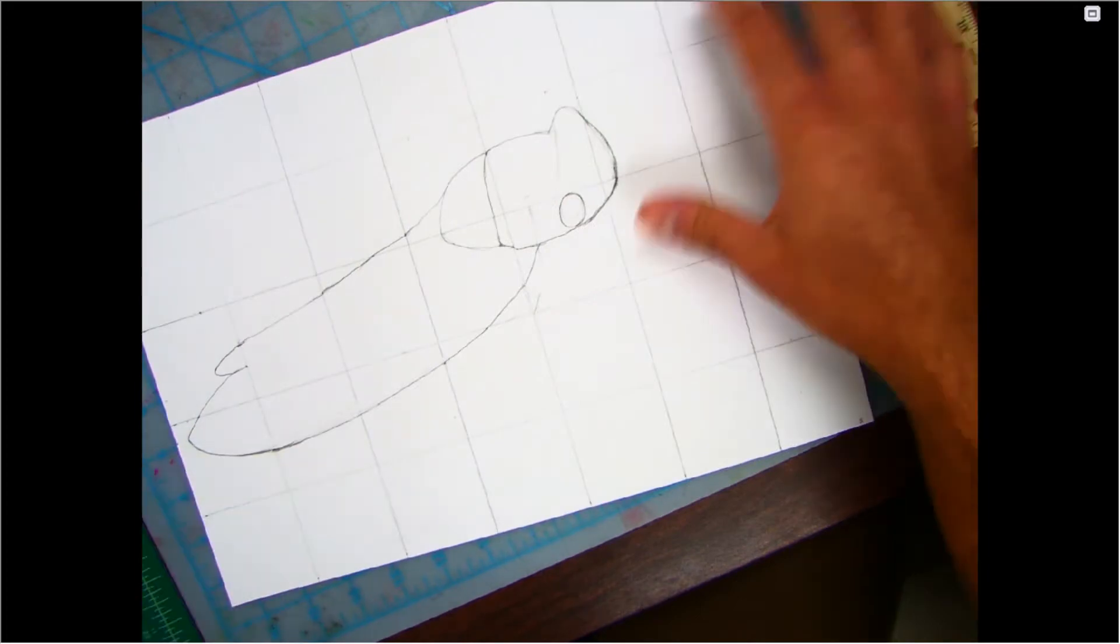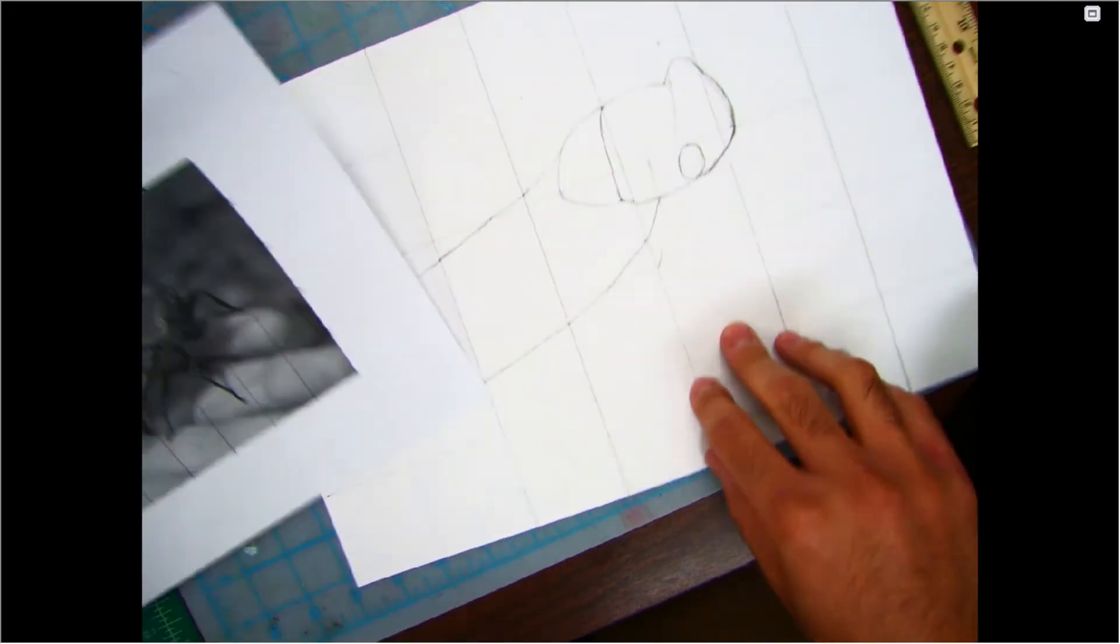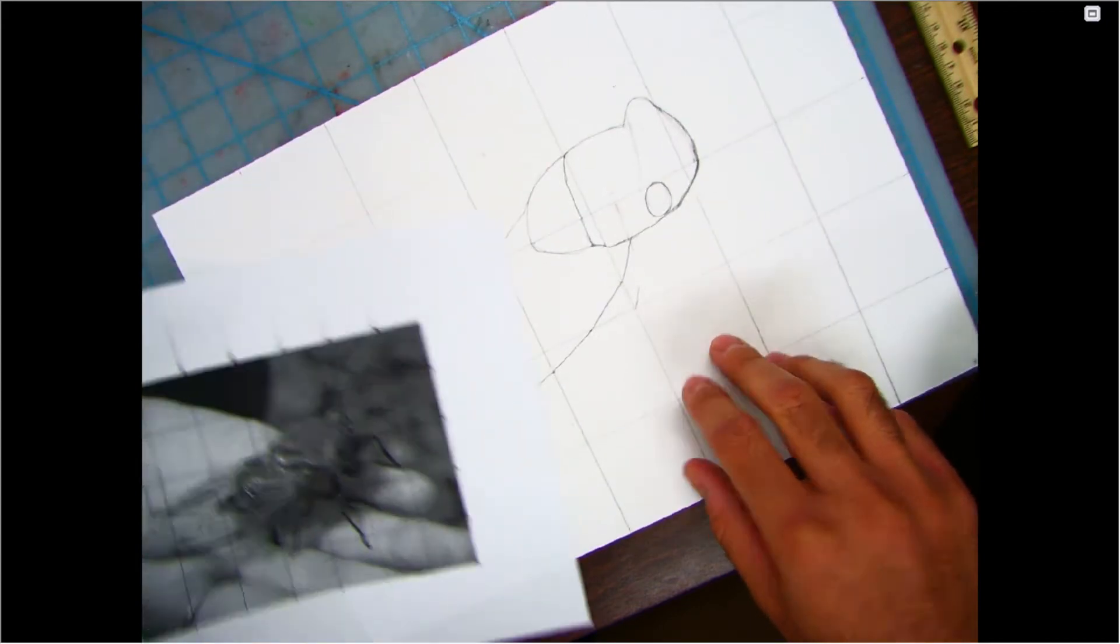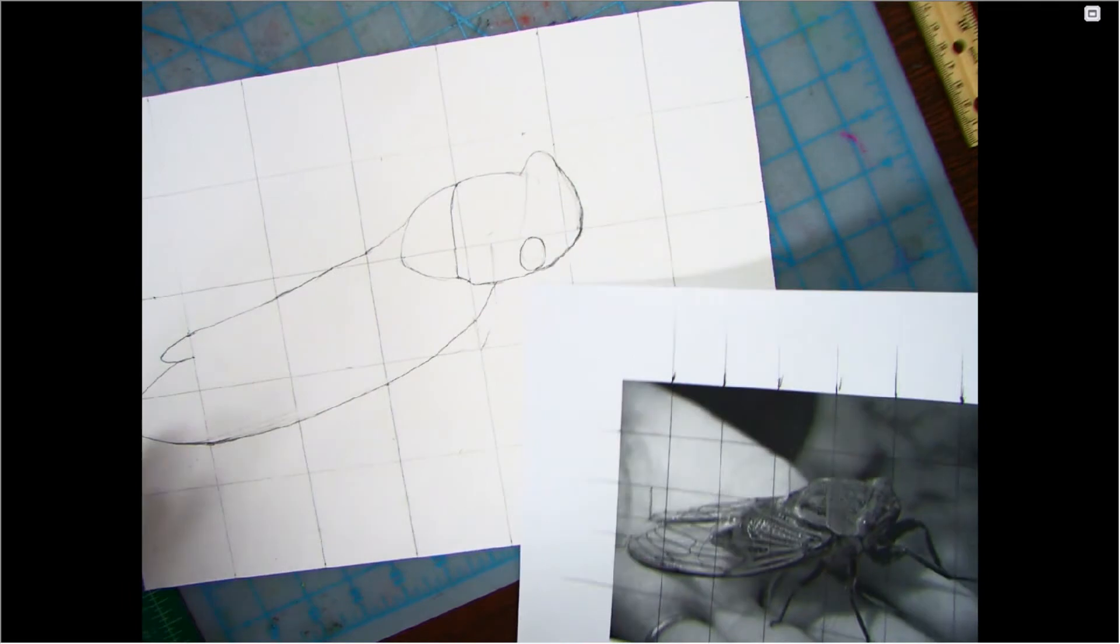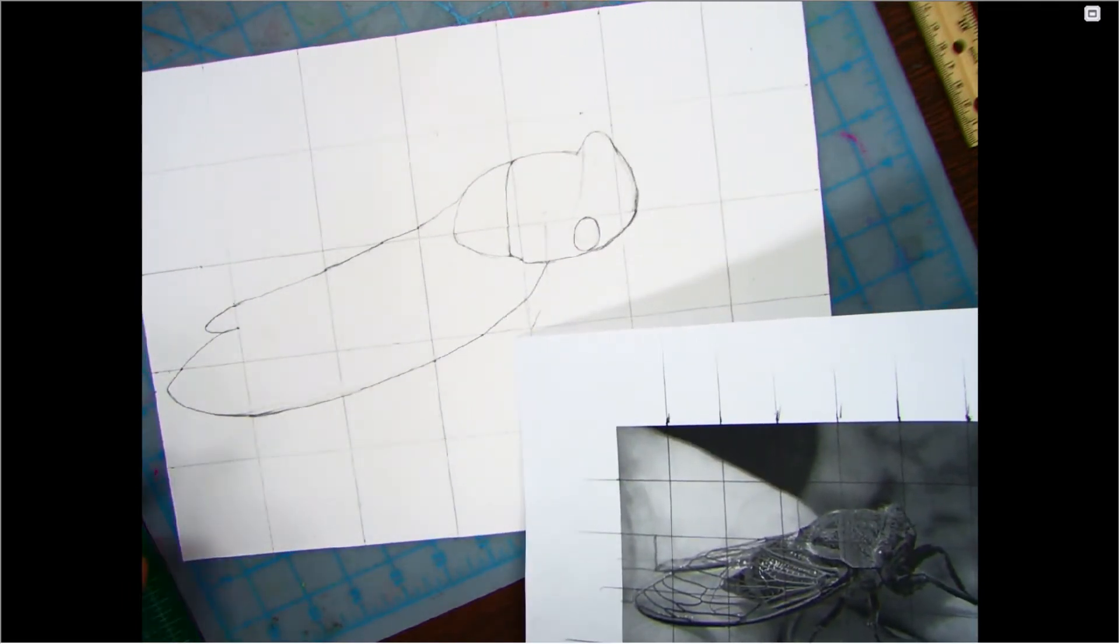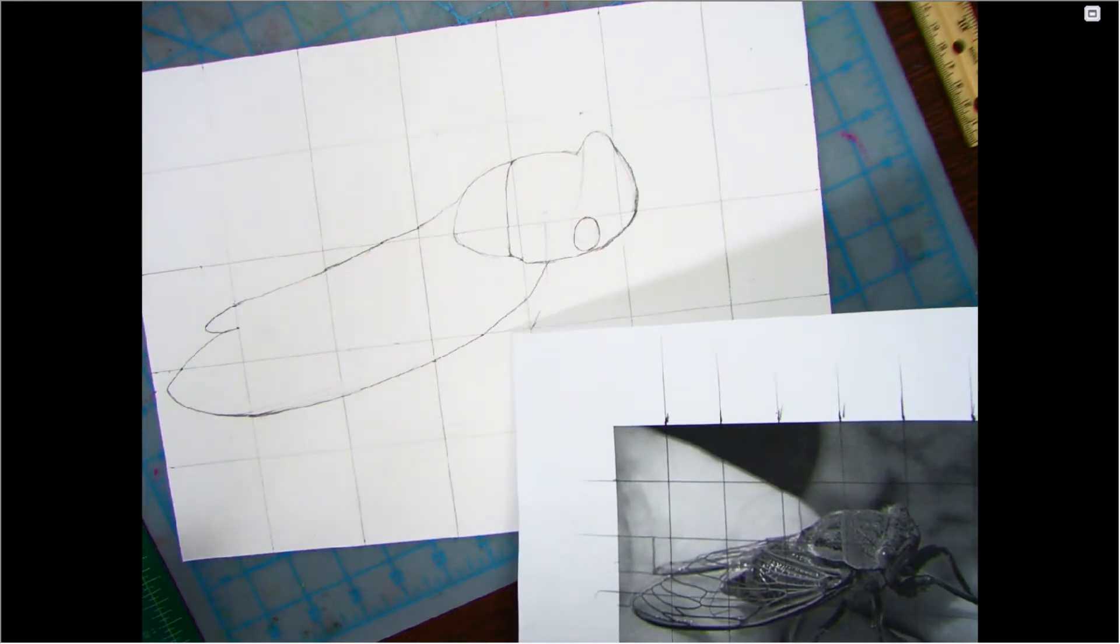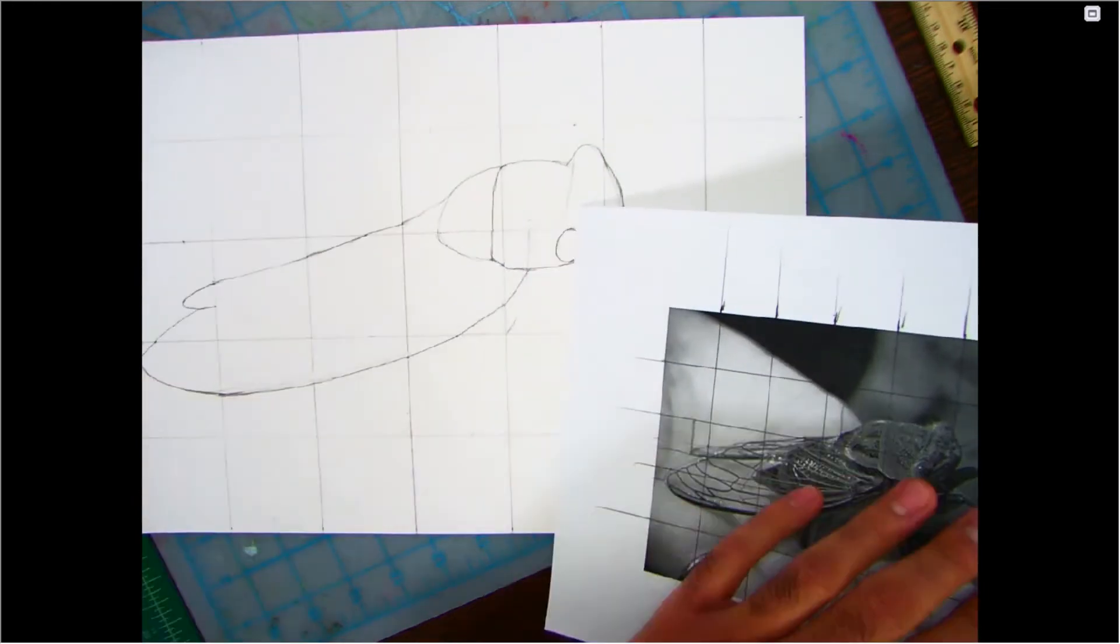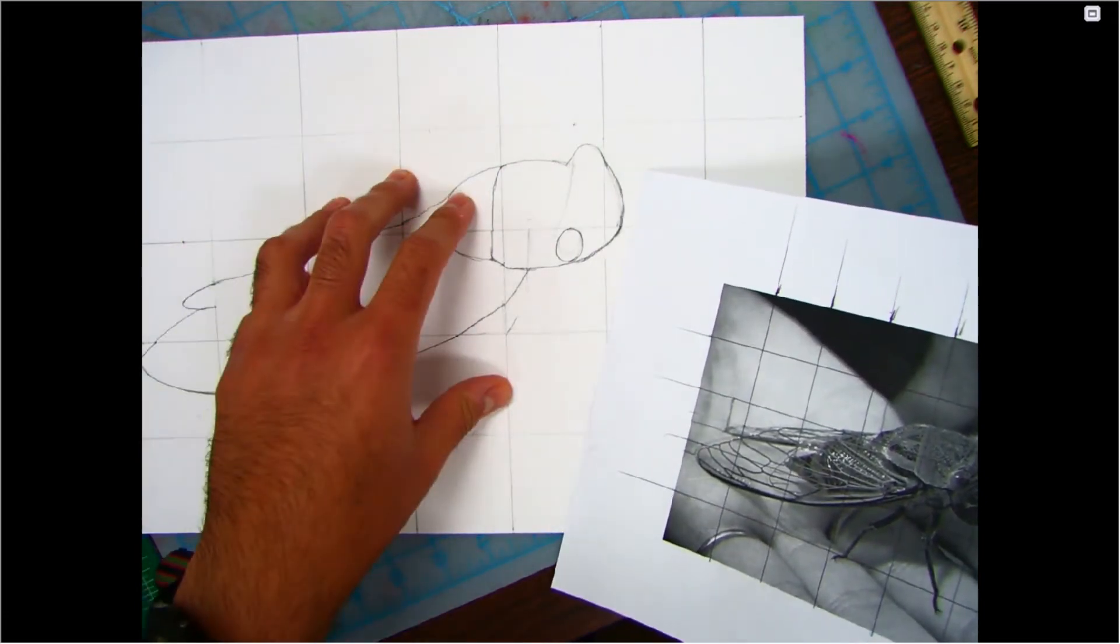What I wanted to show you guys in this video is essentially the next step. We want to transfer this image onto this larger grid. The reason that we're using the grid method is because it gives you fairly accurate proportions. You want to draw that grid in lightly so you can erase it away.